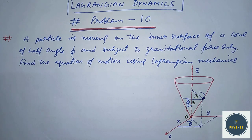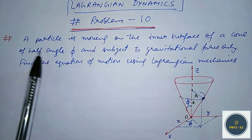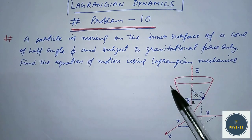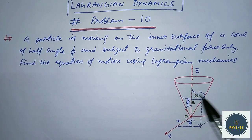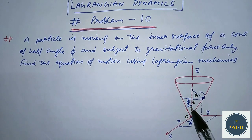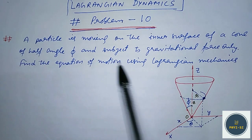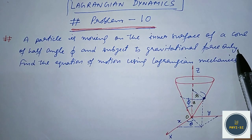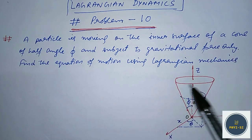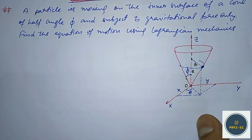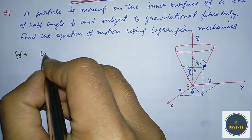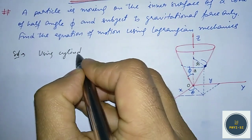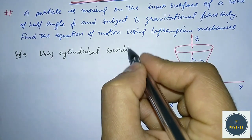The problem is: a particle is moving on the inner surface of a cone. This cone is symmetrical with respect to the Z axis, and a particle is moving inside the inner surface of this cone. The half angle of the cone is φ. The particle is moving only under gravitational attraction. We have to find the equation of motion using Lagrangian mechanics.